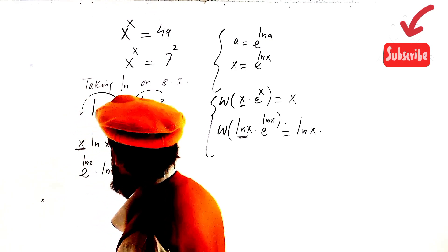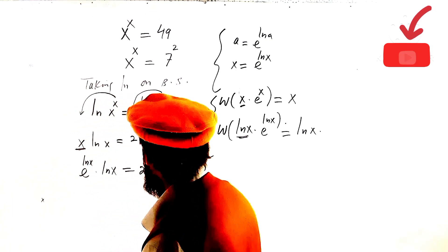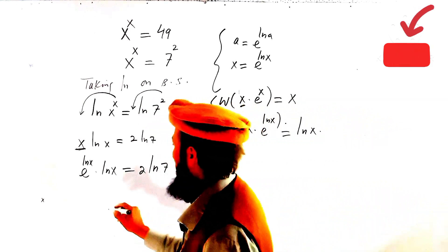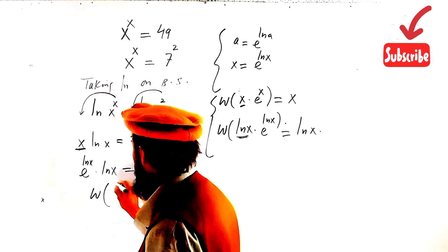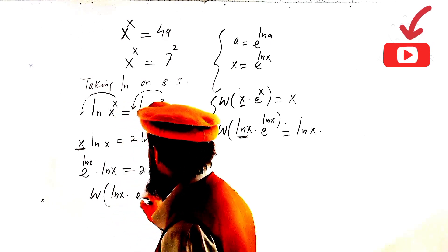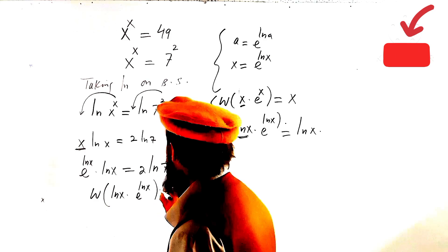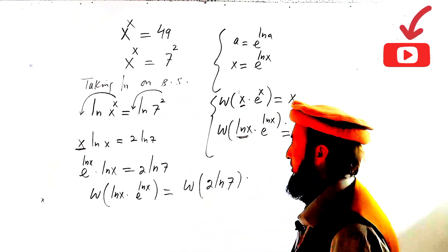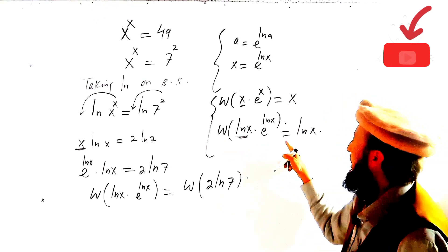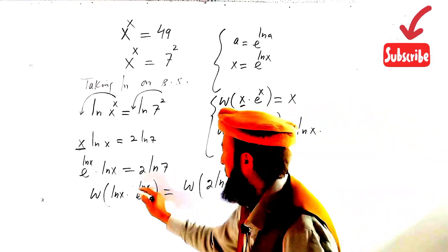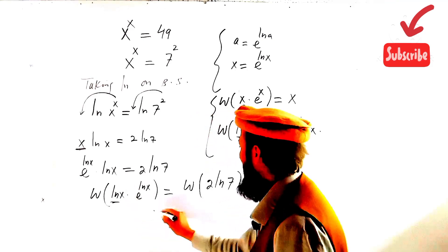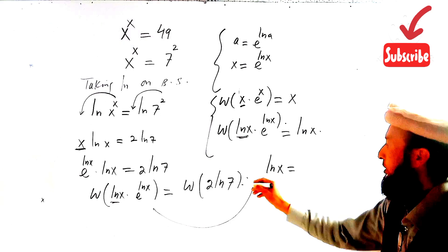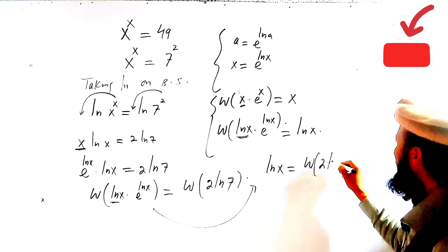So log(x)·E^(log x) = 2·log(7). Now applying the W function on both sides: log(x)·E^(log x) equals W(2·log 7). According to the W function, this reduces to log(x) = W(2·log 7).